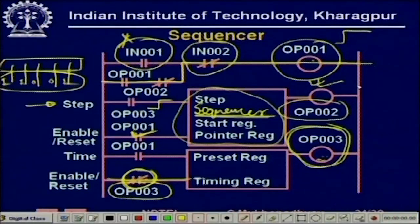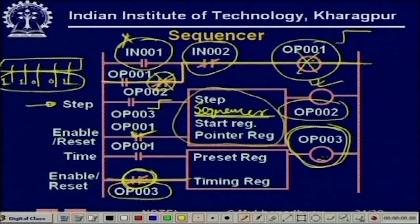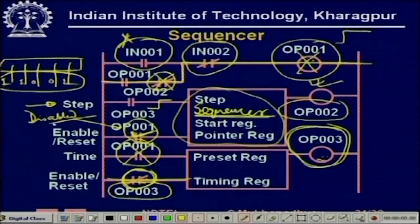At the end of the sequence — the sequence has a fixed number of steps — this output will go high. Once this goes high, OP001 goes off, so there is no more timing and the sequencer itself is disabled. This is the way a sequencer works.